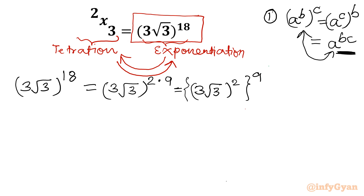Now we know that (3√3)² equals 3² times (√3)² which is 3 times 3 = 9 times 3, giving us 27. So we have 27 power 9.